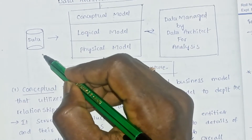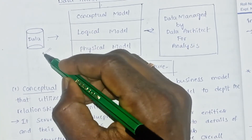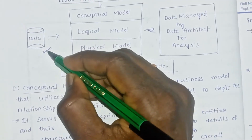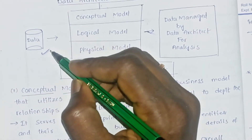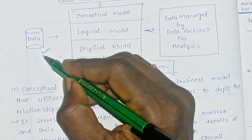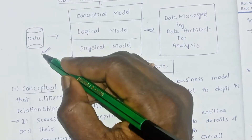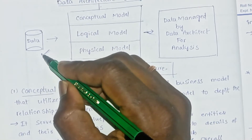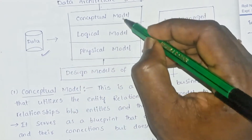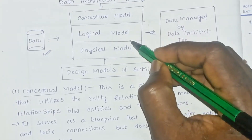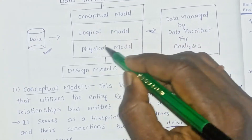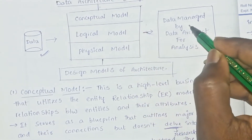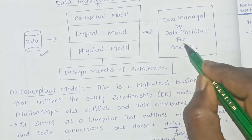In the data architecture design, data is stored in the form of a data warehouse or database. A data warehouse acts as a data storage and is useful for data analytics — it stores data for analytics purposes. After the data architecture design process, the data models are managed by a data architect for analysis.